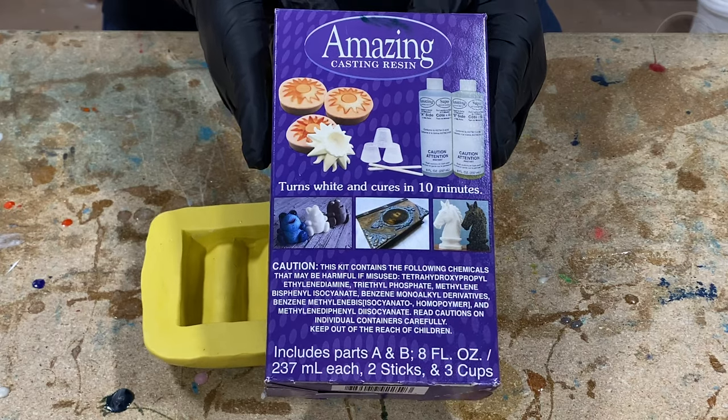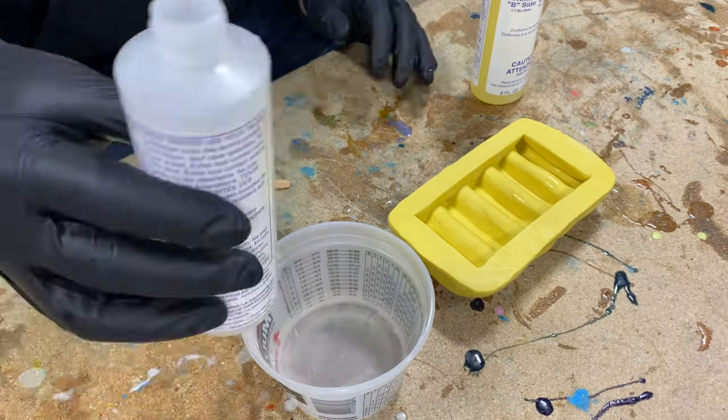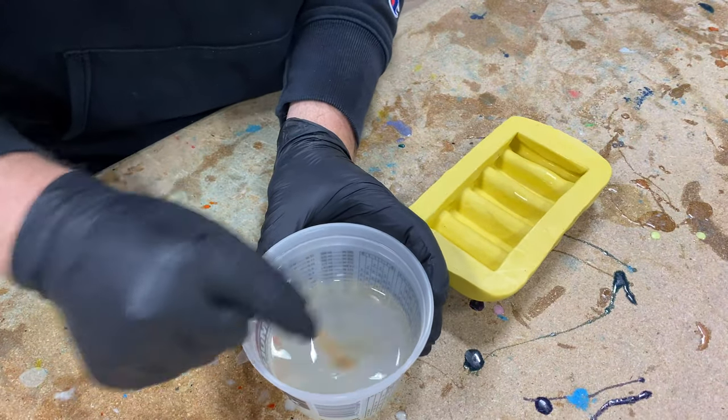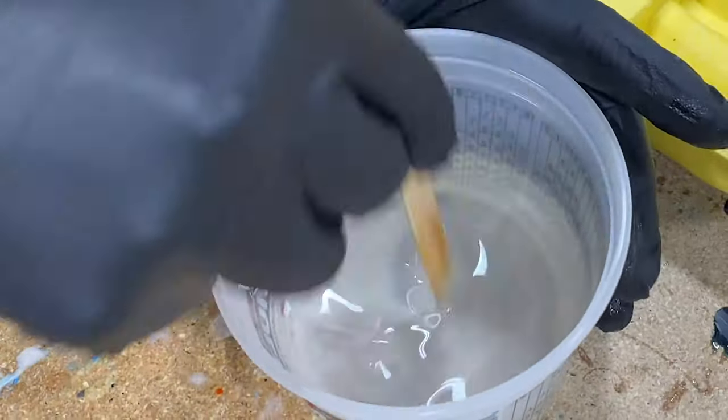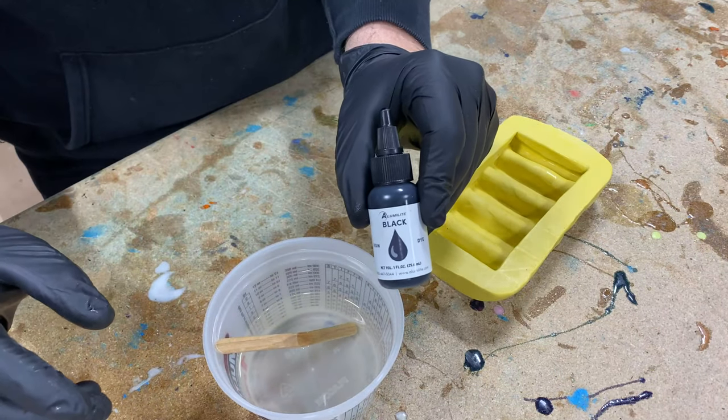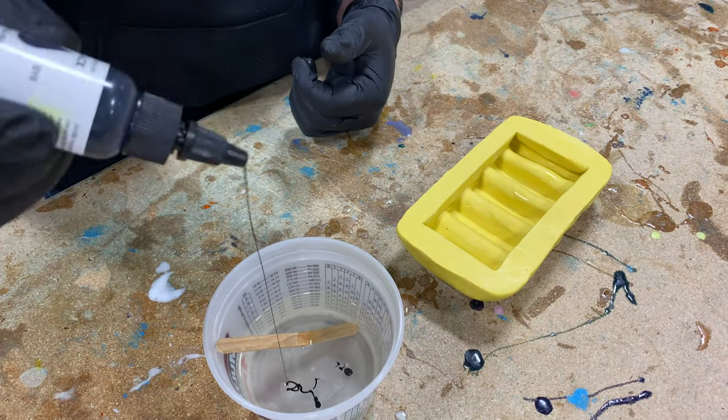For this one, I'm using our amazing casting resin. I'll measure out three ounces of side A and three ounces of side B into a mixing container and combine them pretty quickly. Amazing casting resin has a two minute open time, so getting things into our mold within that two minutes is key.